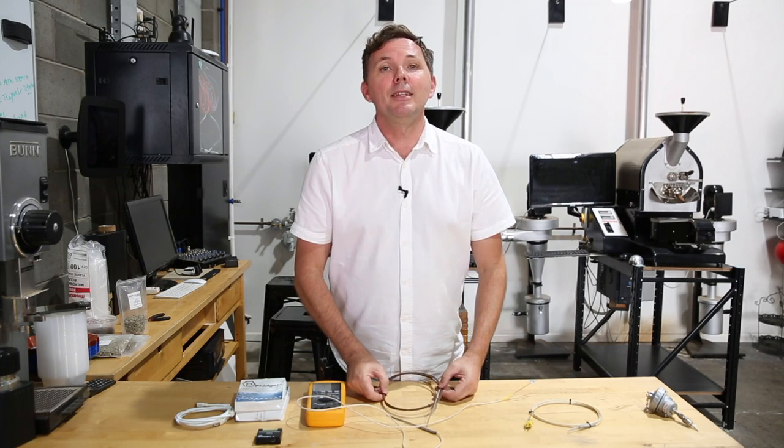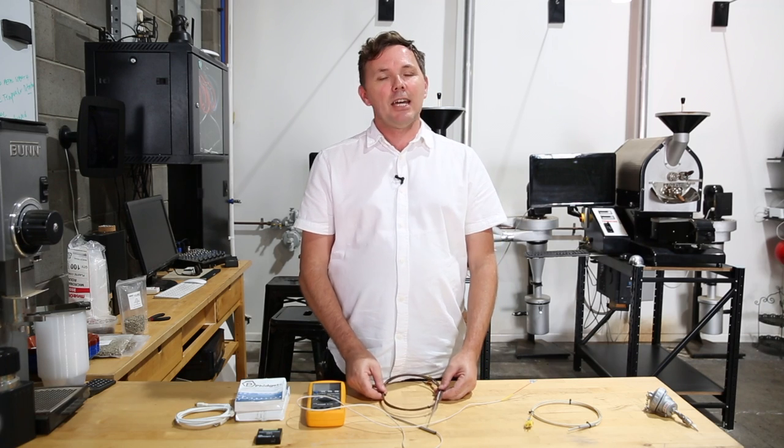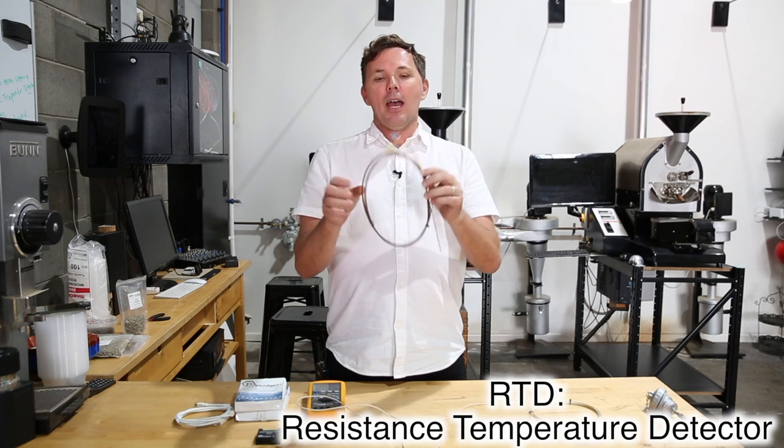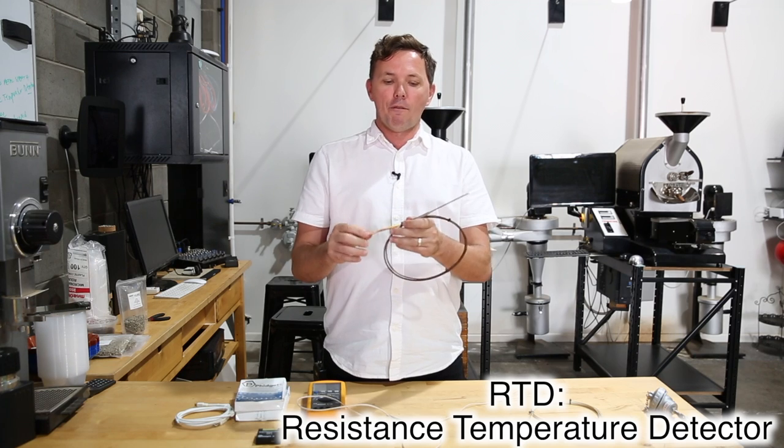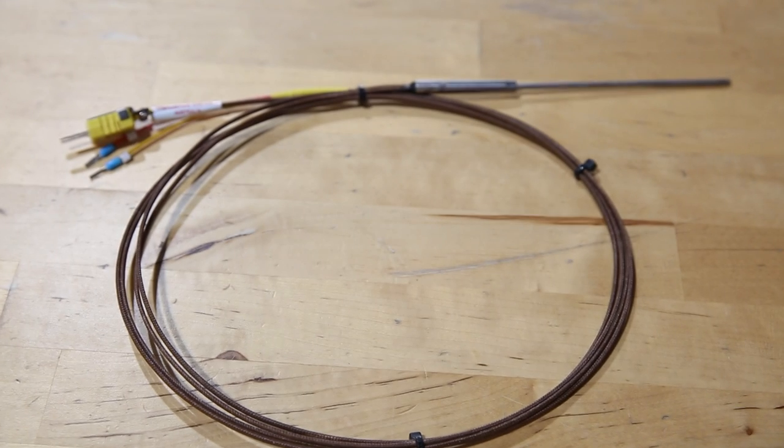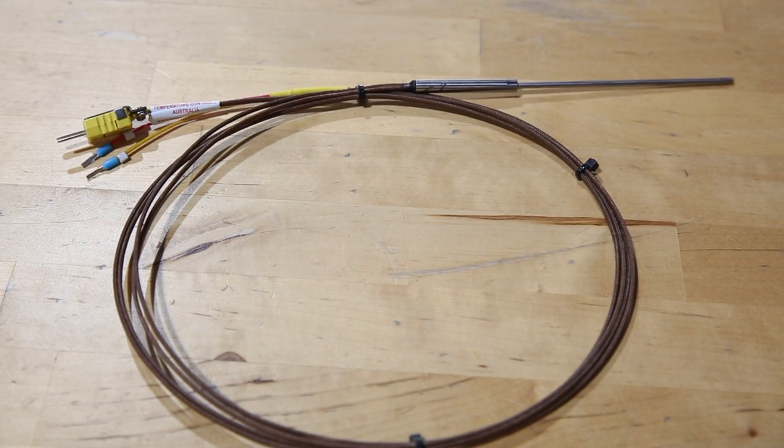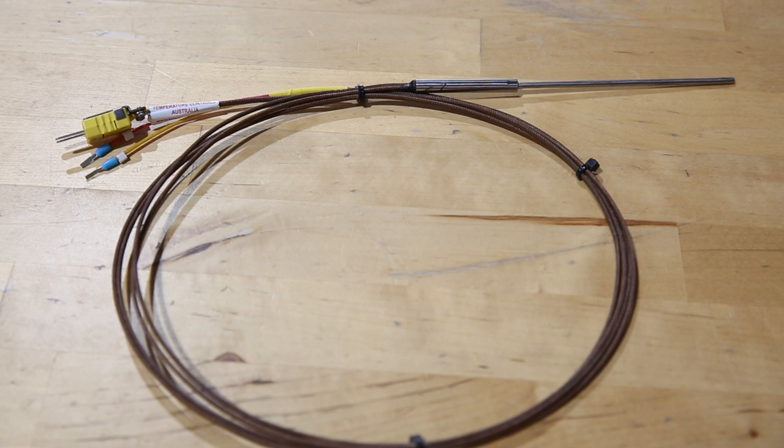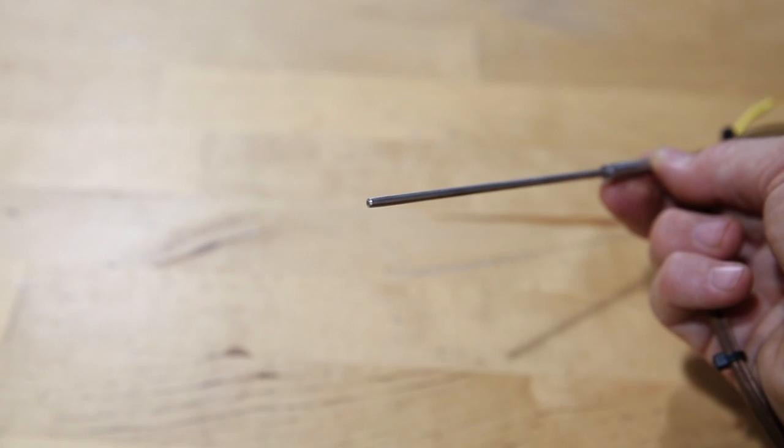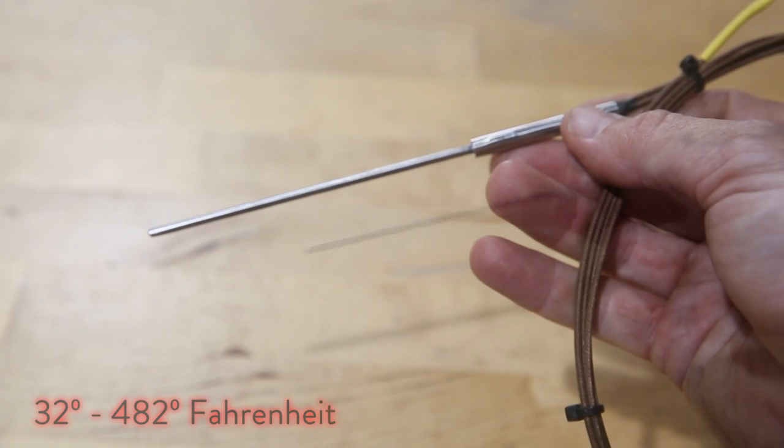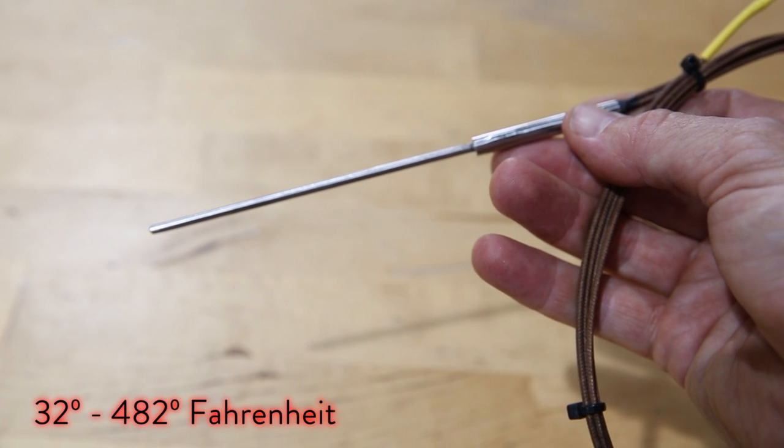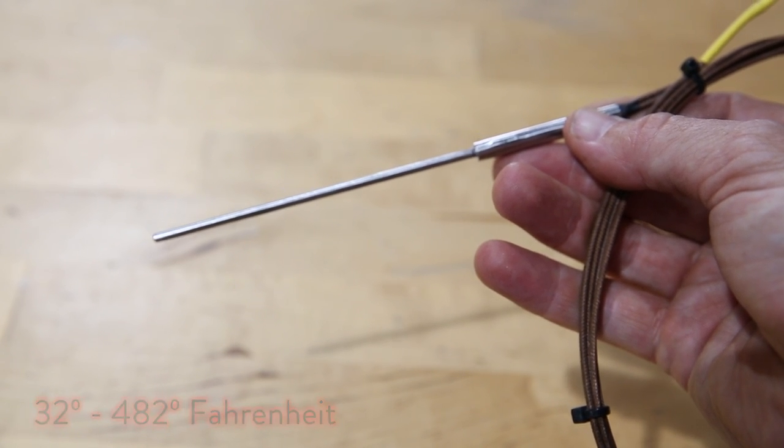The next one I want to talk about is the Resistance Temperature Detector, or RTD. And that's this one here. Very popular for bean temperature probes. It's very accurate, very responsive. But one of the trade-offs is that it only operates at a very low temperature, typically between zero and 250 degrees Celsius. Very appropriate for your bean temperature.